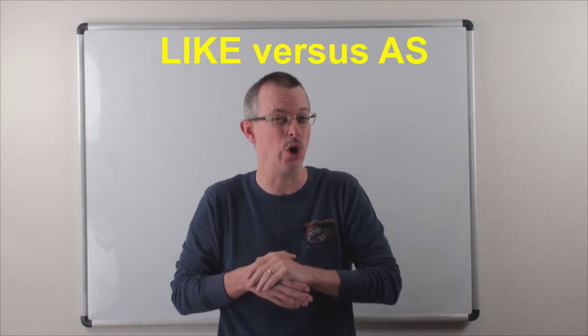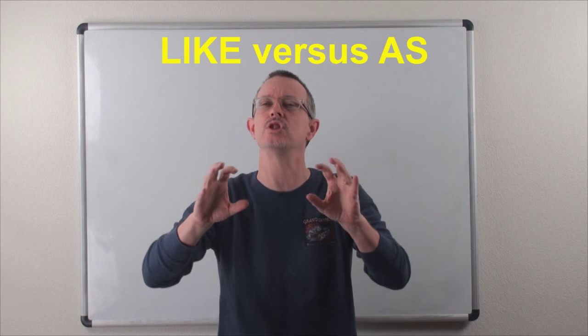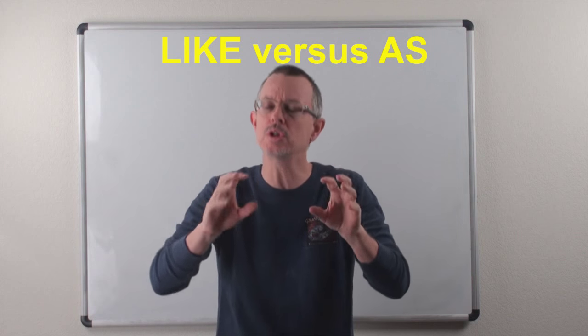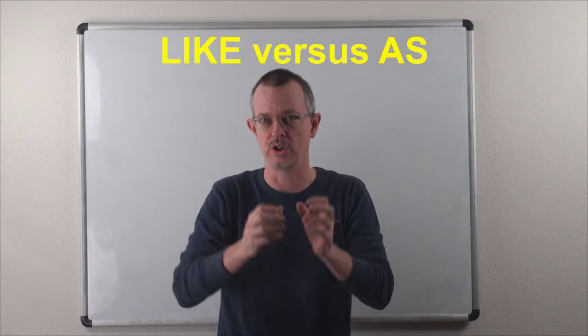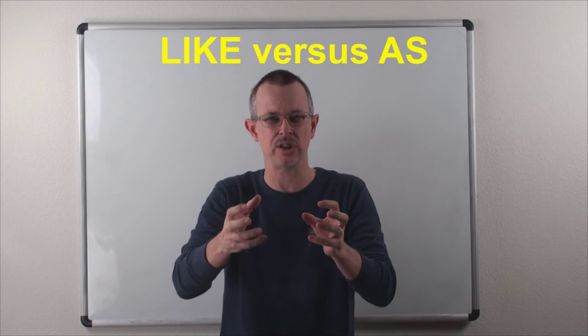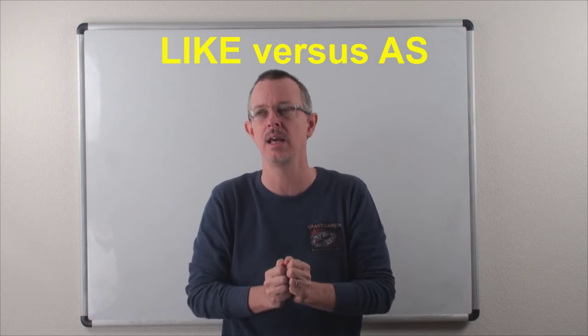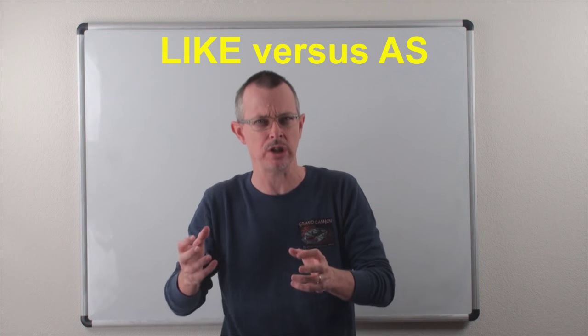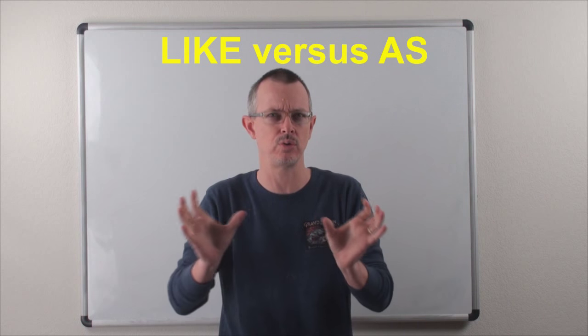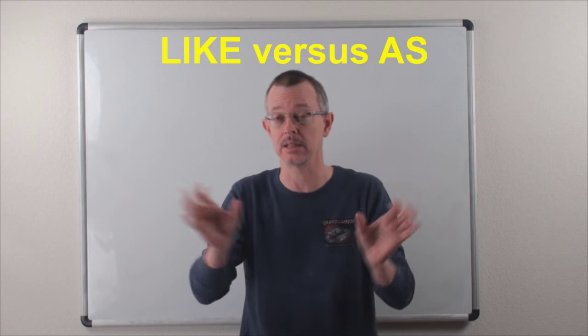Actually, no, they're not. In this confusing situation, usually like is a preposition, which helps show location or placement or time. And as is actually a conjunction. It just connects two thoughts, two sentences, two clauses.